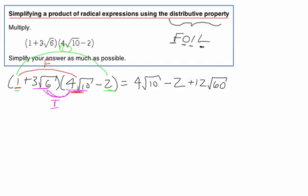One last bit. Last, we look at the last terms of these. And we multiply, in this case, it's 3 radical 6 times a negative 2. So that makes a negative 6 radical 6.